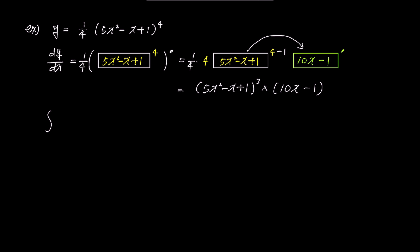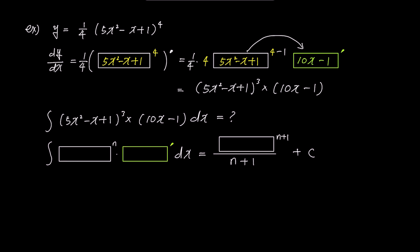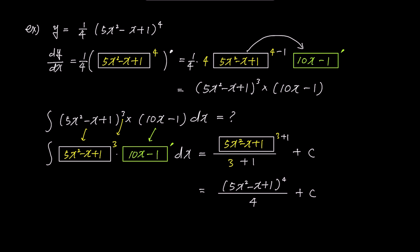Now let's find the integral of (5x² − x + 1)³ times (10x − 1). Using the box rule for integration, the term inside the box is 5x² − x + 1 and n is 3. For the green box prime, we put 10x − 1. The result is (5x² − x + 1)⁴ / 4 + c. Using the box rule, we found the integral in just two lines.